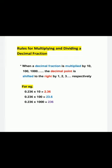For example, 0.236 multiplied by 10. Since 10 has got 1 zero, you are going to shift 1 place towards your right, which gives 2.36. The second example is 0.236 multiplied by 100. Since 100 has got 2 zeros, you shift 2 places towards your right, giving 23.6. The third example is 0.236 multiplied by 1000. Here you have got 3 zeros, so you shift 3 places towards your right, which equals 236.